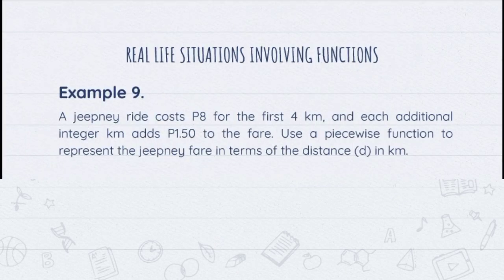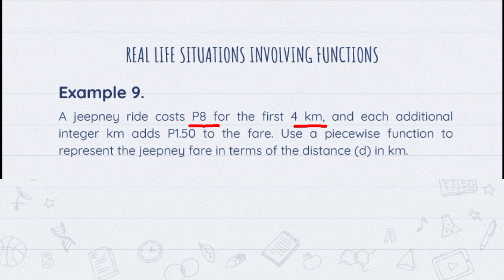We are now on Example 9. A jeepney ride costs 8 pesos for the first 4 kilometers, and each additional integer kilometer adds 1.50 to the fare. Use a piecewise function to represent the jeepney fare in terms of distance in kilometers. Starting with the first sentence — 8 pesos for the first 4 kilometers — our first function is F of D equals 8 if D is less than or equal to 4.